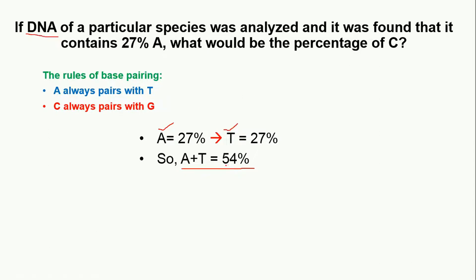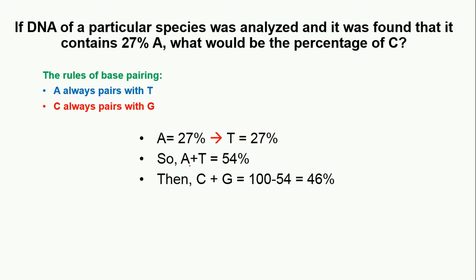It means that in this particular DNA we have 54% adenine and thymine combined. Since adenine plus thymine plus cytosine plus guanine must equal 100%, we will subtract 54% from 100%. After the subtraction, we will have 46%, meaning this DNA has 46% cytosine and guanine combined.